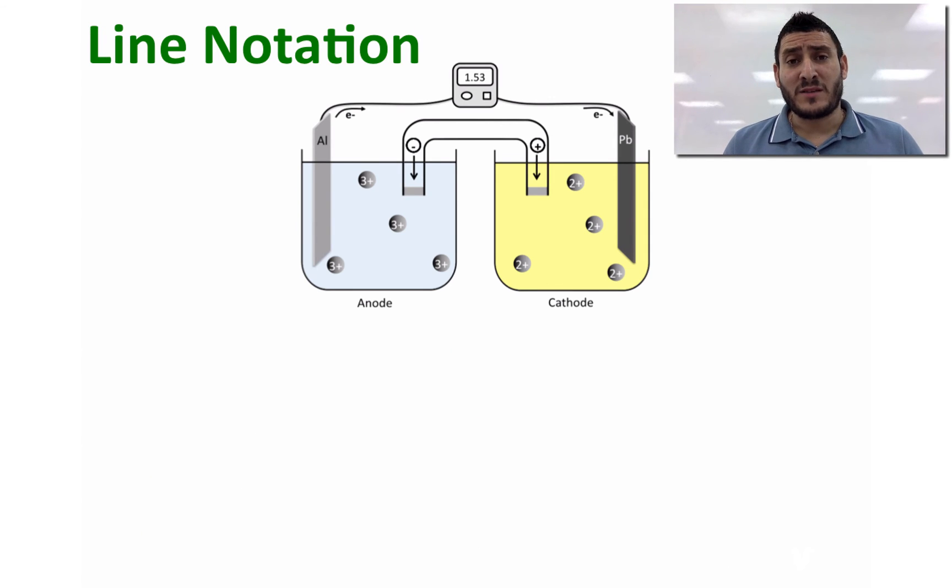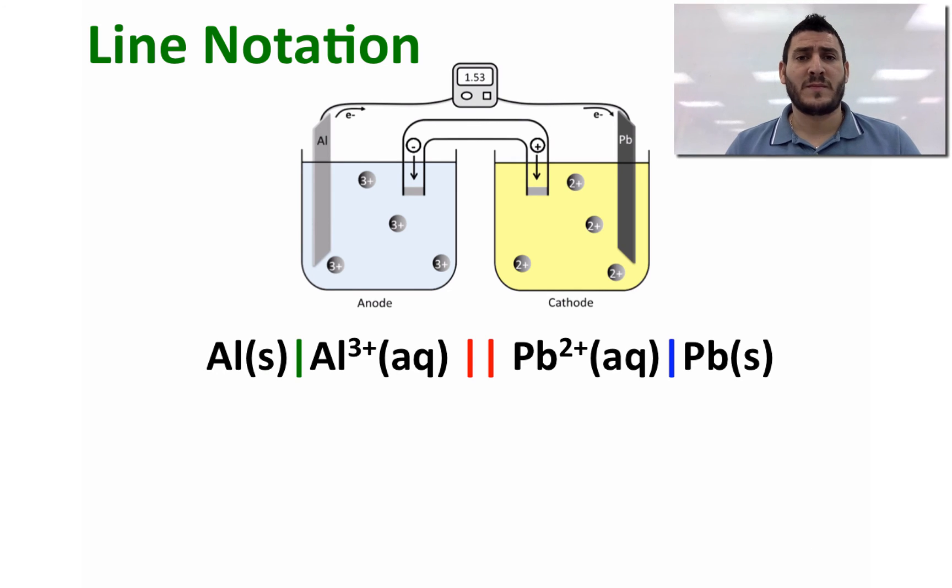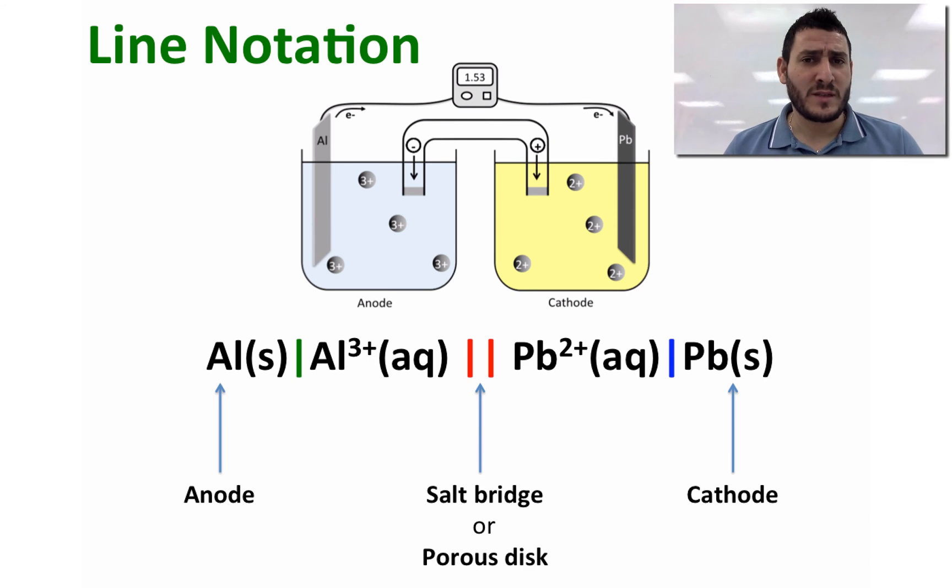Once the galvanic cell is built, we can describe it using what is called line notation. In the line notation, we start by writing the anode to the far left, the cathode to the far right, and then two lines in the middle that represent the salt bridge or the porous disk.